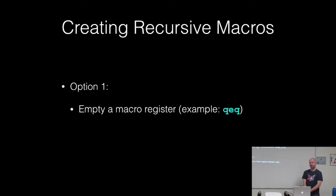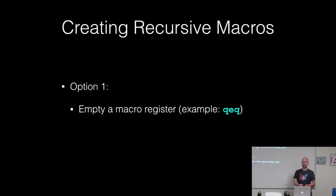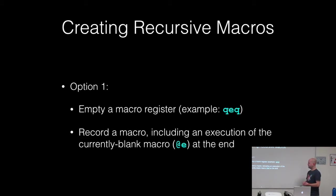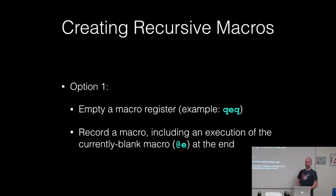There are actually a few different ways to create recursive macros. The first way is to start by emptying a macro register — record an empty macro with QEQ, which records an empty string into the macro. Then you record your normal macro and press @E before closing out: QE, record the macro, @E, Q. What happens is you're replaying the empty macro just before you exit. Because it's empty, nothing happens during recording. But when it goes to execute itself again later, there's content at that point and it replays itself over again. I don't necessarily like this because you have to remember to empty the register first and remember to do that @E.